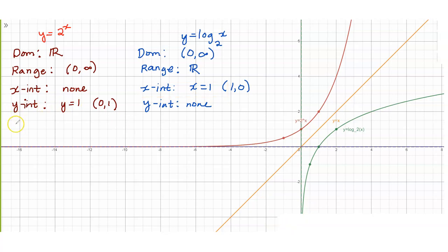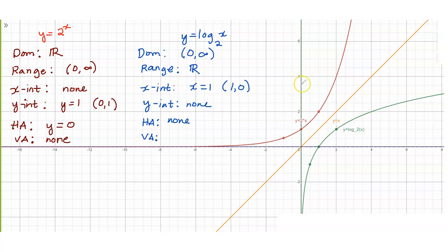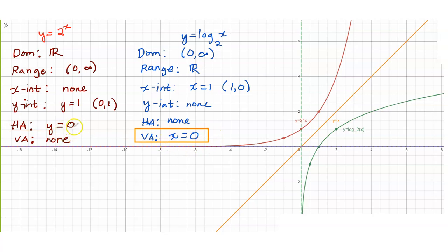Let's look at our asymptotes. For the exponential function, we have the horizontal asymptote y equals 0, and no vertical asymptote. For the logarithmic function, we have no horizontal asymptote, and for our vertical asymptote, we have the y-axis, that's x equals 0. Notice they were interchanged — the horizontal asymptote became the vertical asymptote in the logarithmic function. y equals 0 became x equals 0. The exponential function has no vertical asymptote; when we go to its inverse, it will have no horizontal asymptote.